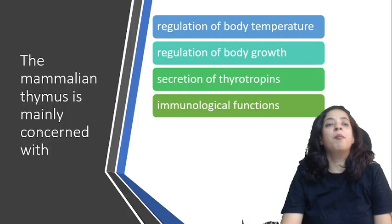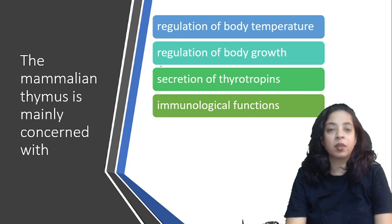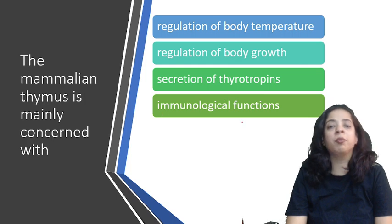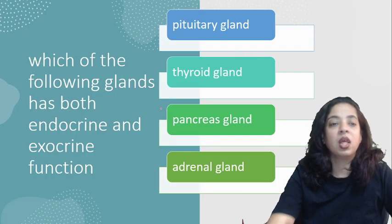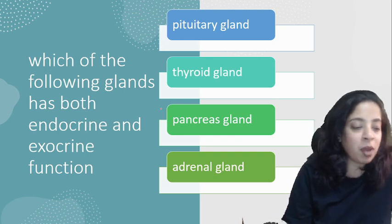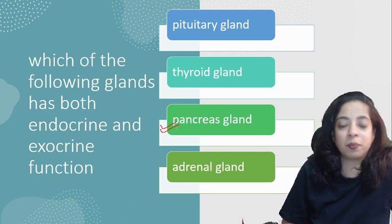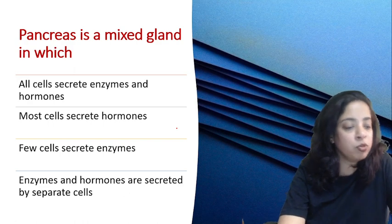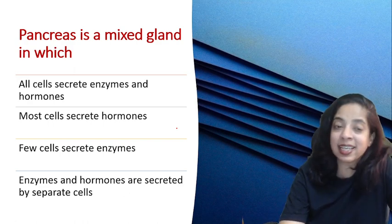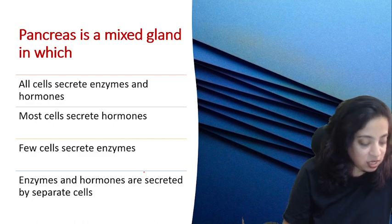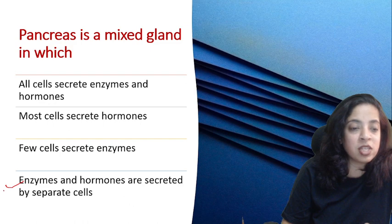The mammalian thymus is mainly concerned with: regulation of body temperature, regulation of body growth, secretion of thyrotropins, or immunological functions? The answer is immunological functions. Which of the following glands has both endocrine and exocrine function? The answer is pancreas. In pancreas as a mixed gland: are enzymes and hormones secreted by the same cells or separate cells? The correct answer is D — enzymes and hormones are secreted by separate cells.